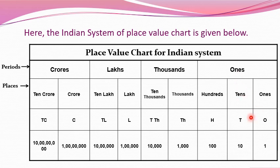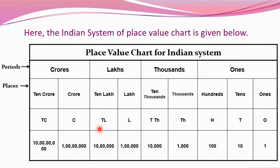In the ones period, the ones place, tens place, and hundreds place are abbreviated as O, T, and H. In the thousands period, the thousands place is abbreviated as TH and the ten-thousands place as TTH. The lakhs place is abbreviated as L, ten-lakhs as TL, crores as C, and ten-crores as TC. The key point to remember is that only the ones period has three places and all other periods have two places, which helps us write numbers correctly with commas.